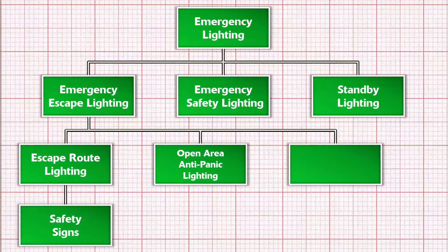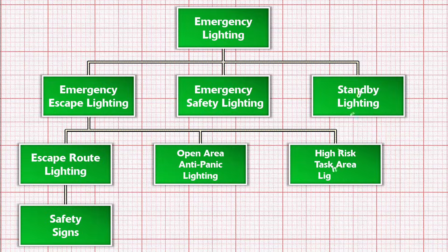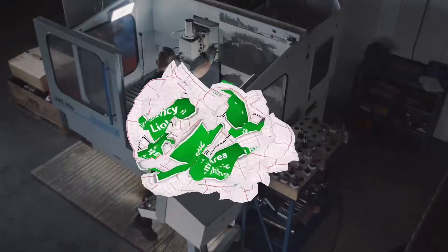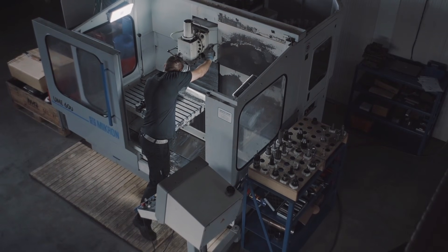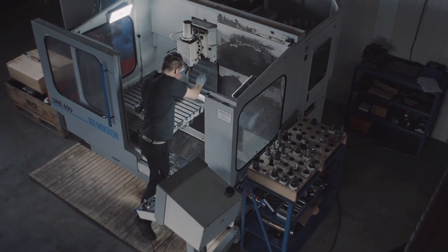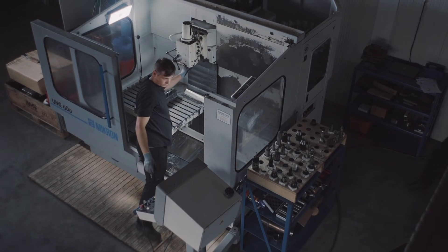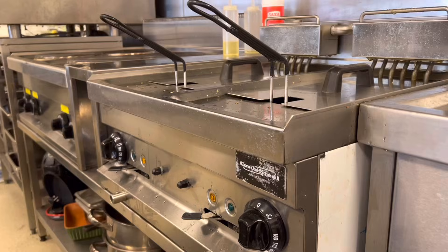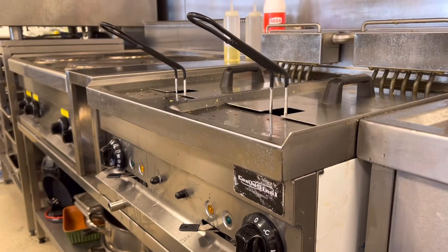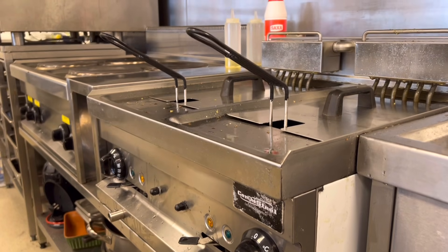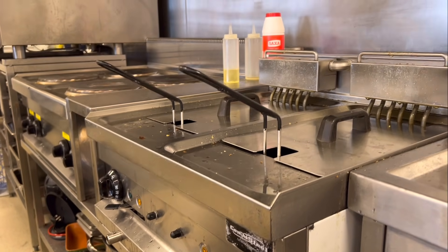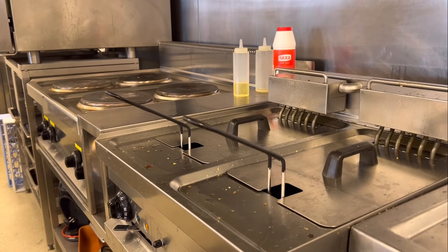The third category of emergency escape lighting is high risk task area lighting. This is required in areas to protect people engaged in potentially dangerous processes or situations who need sufficient light to shut things down safely. A good example is an industrial kitchen where people are working with sharp knives, boiling hot fluids, and naked flames.